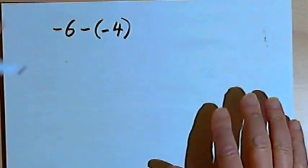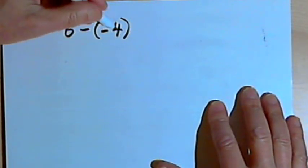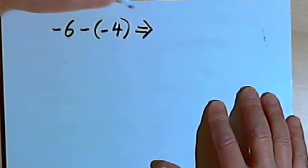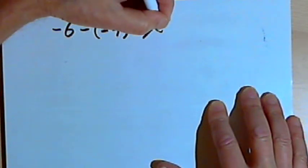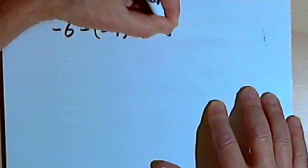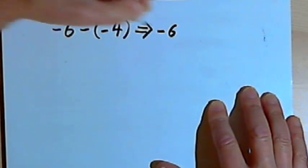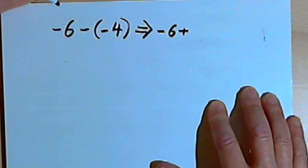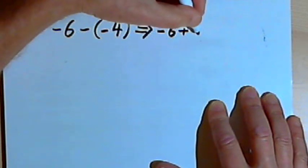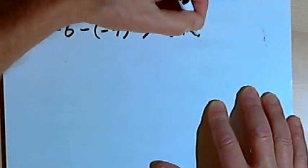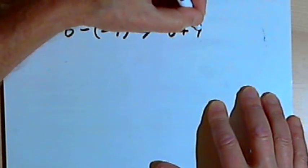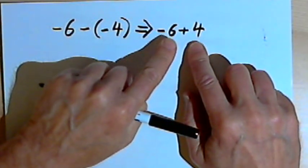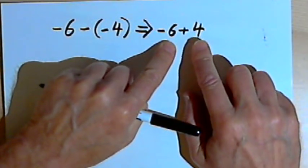Here I've got negative 6 minus negative 4. I'm going to turn this subtraction problem into addition. I'll have negative 6, and instead of minus I'll have a plus — the opposite of the minus. And instead of negative 4, I'll have the opposite of negative 4, which is a positive 4. So now I've got the addition problem negative 6 plus 4.